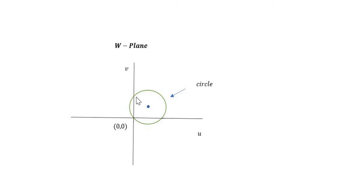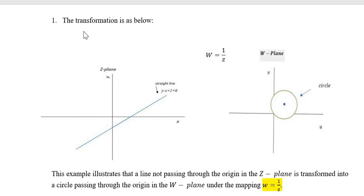This is the image in the w plane — a circle which passes through the origin. The straight line y minus x plus 1 equal to 0 under the mapping w equal to 1 upon z, that is the inverse mapping, is mapped to a circle which passes through the origin. This example illustrates that a line not passing through the origin in the z plane is transformed into a circle through the origin in the w plane under the mapping w equal to 1 upon z. For more examples, we will come up with more videos. Thank you.